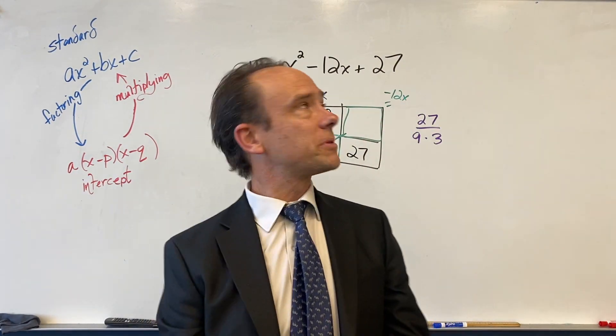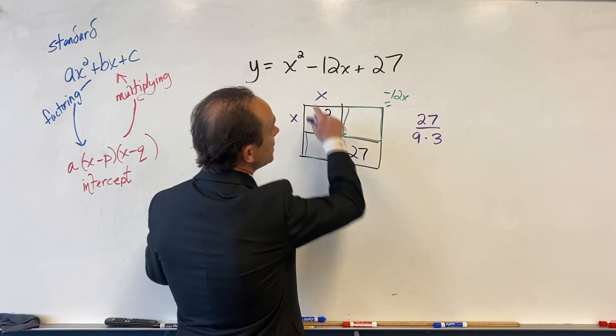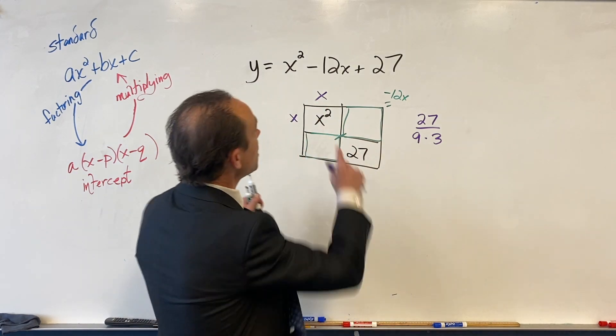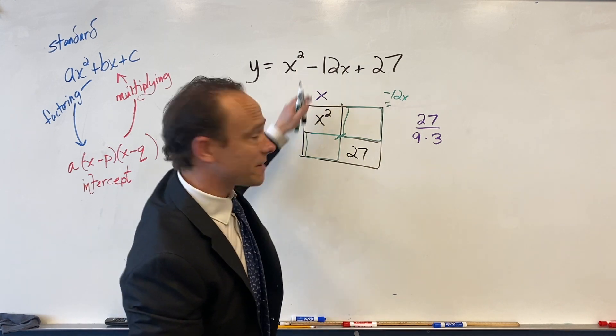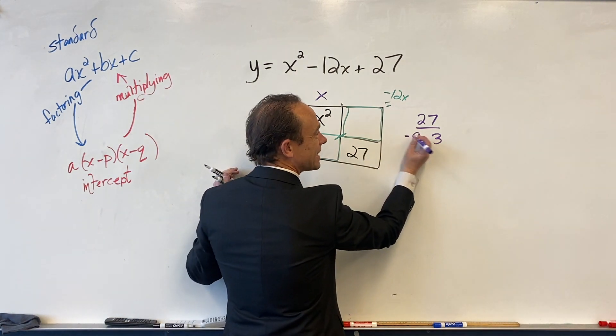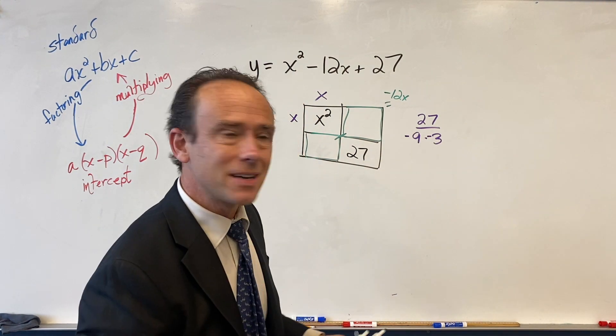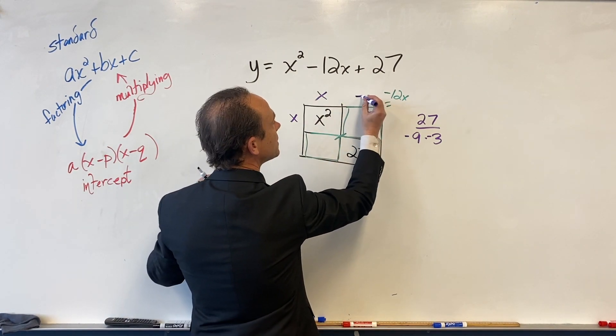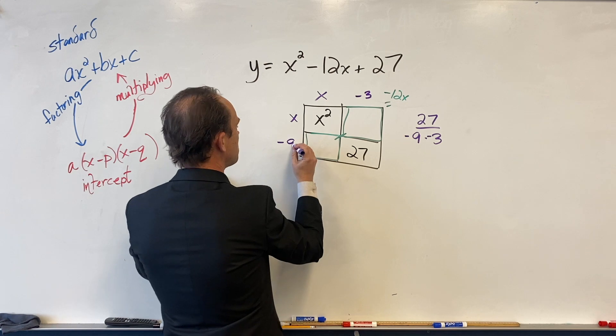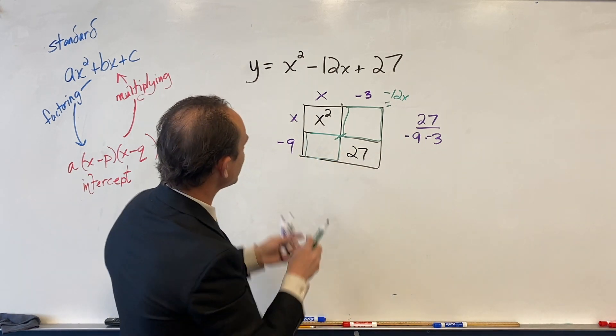Now keep in mind - we've got to be a little smart because they multiply to a positive but they add to a negative. So both numbers cannot both be positive, because then they'll never add to a negative. So let's go here - minus 3, minus 9.